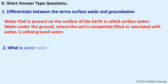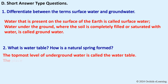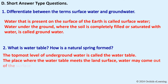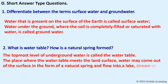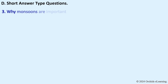What is the water table and how is a natural spring formed? The topmost level of underground water is called the water table. Where the water table meets the land surface, water may come out as a natural spring and flow into a lake, stream, or ocean.